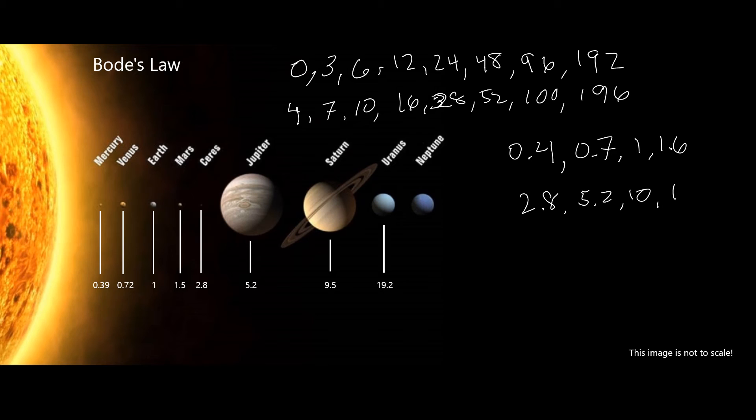What are these numbers supposed to mean? Well, they are the number of times farther or closer than the Earth the planet is to the Sun. So, this number, 10, says that Saturn is about 10 times farther from the Sun than the Earth. And this number, 0.4, says that Mercury is about four-tenths, or two-fifths as far from the Sun as the Earth.